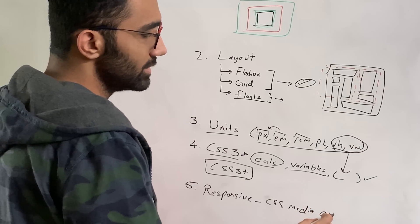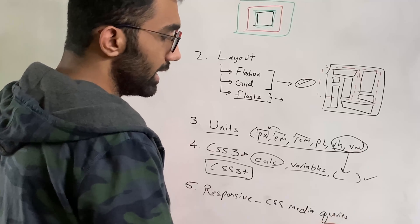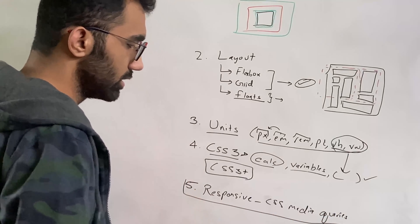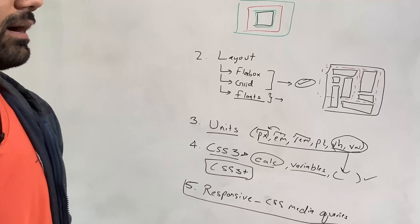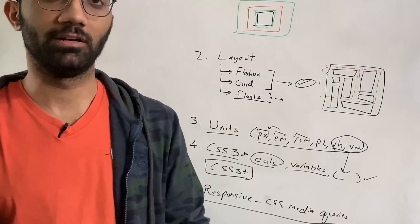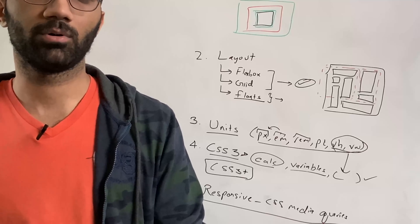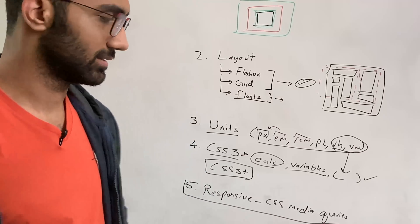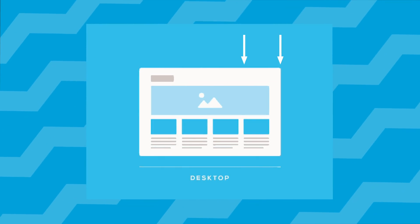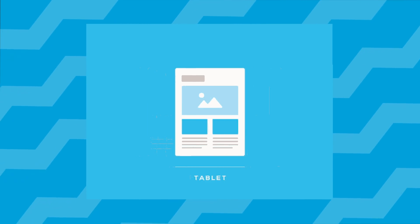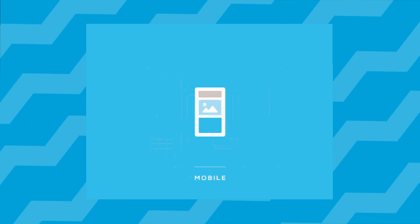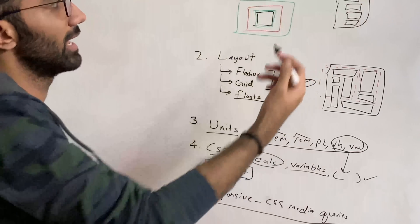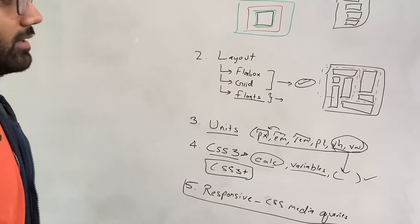So that is also very important. New features like new units, for example VH and VW, are also something which you can cover in this one. So having a look at and knowing about what CSS3 features or CSS3 plus as well, which is beyond CSS3, what all sorts of features are available and what you can use right now in browsers - super important stuff.